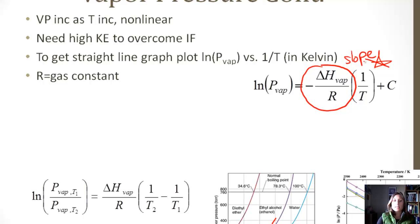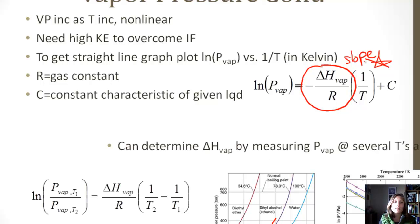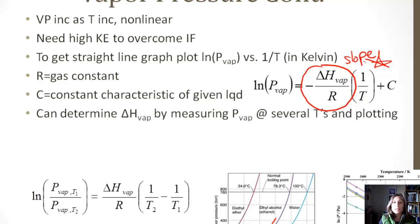Remember, R is our gas constant. C is new. C is a constant characteristic of the given liquid, and so that would need to be given. You can determine the delta H of vaporization by measuring the vapor pressure at several temperatures and then plotting your results.